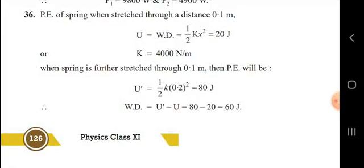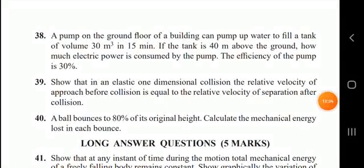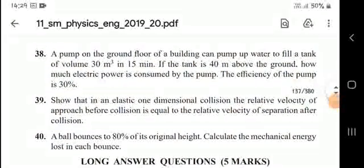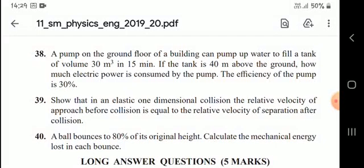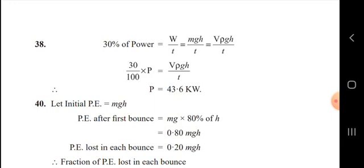Numerical: A pump fills a tank of volume 30 m³ in 15 minutes; the tank is 40 meters above the ground. The pump efficiency is 30%. Power consumed: 30% × P = mgh/t = ρVgh/t, giving P = 43.6 kilowatts.